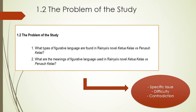A research problem is a question that a researcher wants to answer or a problem that a researcher wants to solve. Like in this thesis, there are two questions: first, what types of figurative language are found in Rhenius's novel 'Ketua Kelas versus Perusukelas'? And second, what are the meanings of figurative language used in Rhenius's novel 'Ketua Kelas versus Perusukelas'?